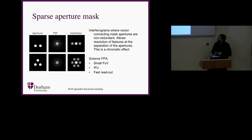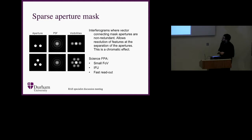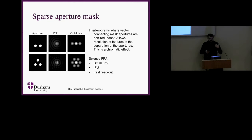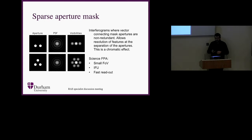Sparse aperture masking, which we just heard about from Sasha: a simple figure shows what you're doing with two apertures, how you combine them, and the visibilities you get — what size scales you can observe. With three apertures you start to resolve features. In a typical system you might have tens of sub-apertures in a mask, maybe up to around a hundred. These have a relatively small field of view but may benefit from an IFU. There is a chromatic effect and a need for fast readout.